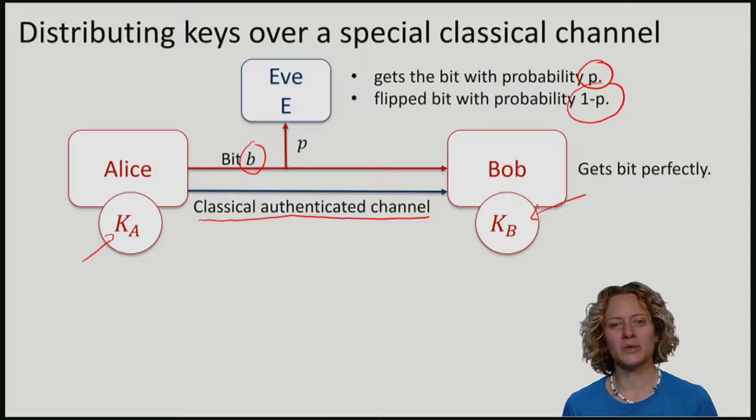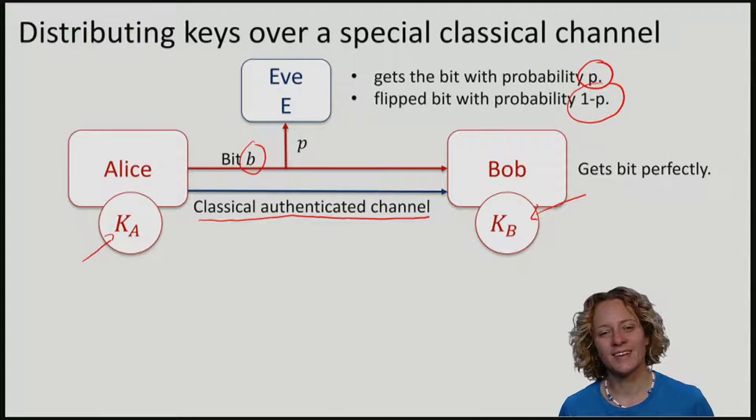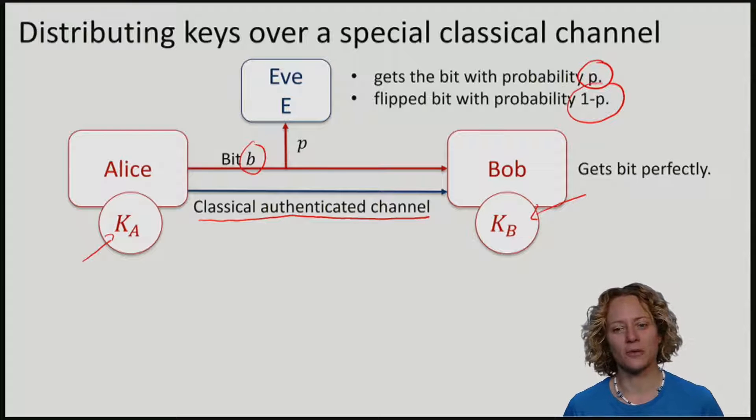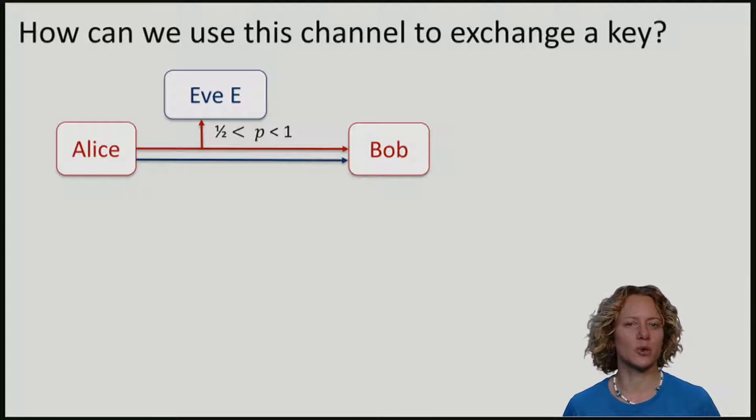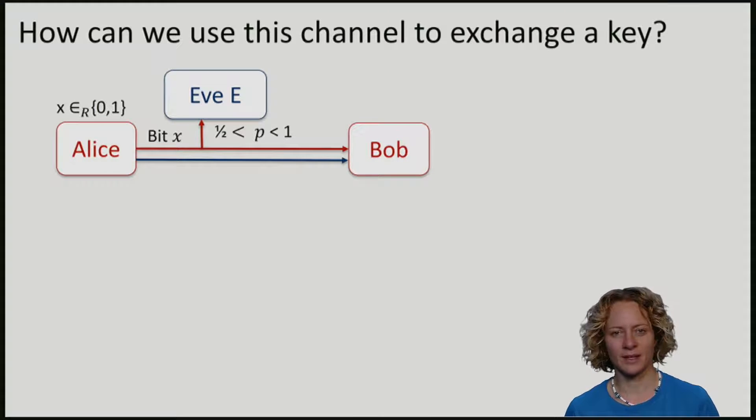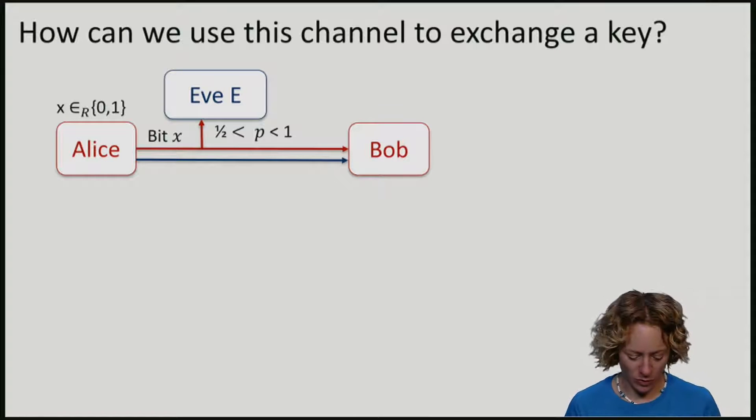So how can we use this funky channel to distribute a key? Let's consider a scenario where p is more than 1/2. And let's consider a protocol where Alice inputs a bit, I'll call that now x, into the special channel. Alice chooses this bit randomly. Remember that she has a random number generator, and she sends the bit x to Bob.